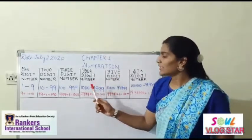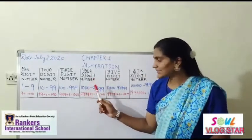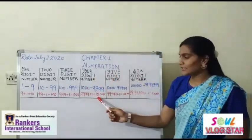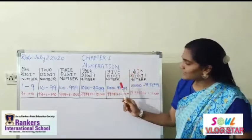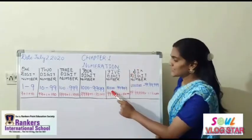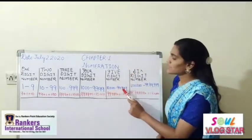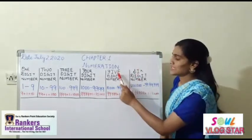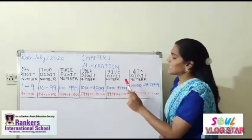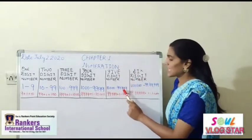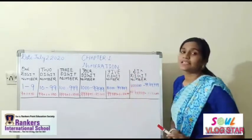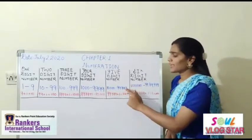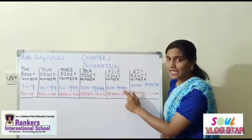If we add 1 to 9999 it will become 10,000. Now 10,000 is the five digit number. Five digit numbers start from 10,000 to 99,999. So 10,000 is the smallest five digit number and 99,999 is the greatest five digit number.